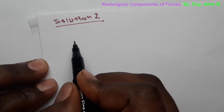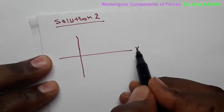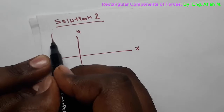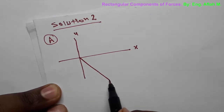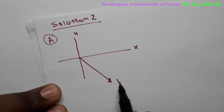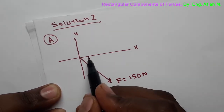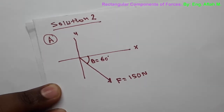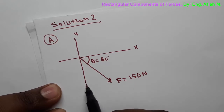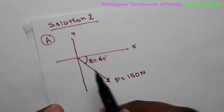In question 2, let me draw the X and Y coordinate system. The force given is acting with F equals 150 Newtons, and the angle is theta equals 60 degrees with the X-axis. In part A, we are asked to determine the rectangular components of this force.